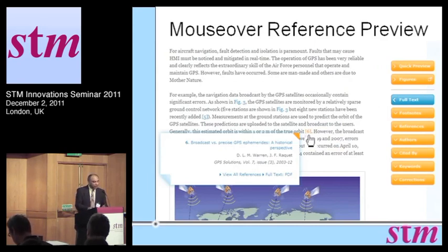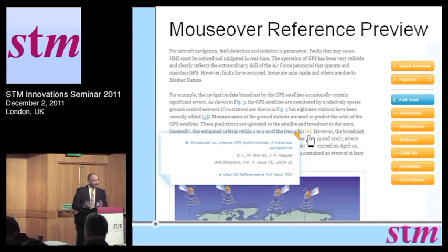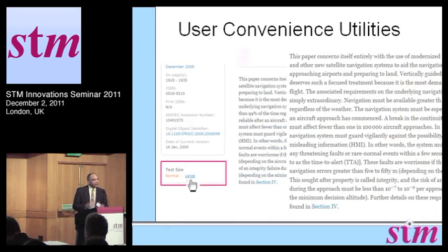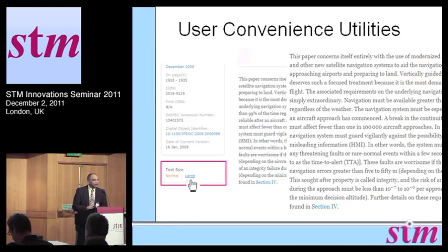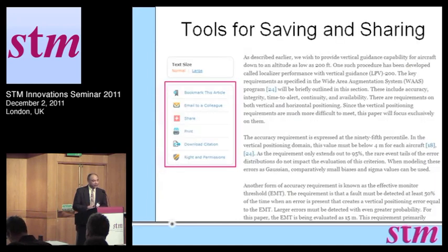In terms of references, there are mouse-over reference links so the user can click on the actual reference hyperlinks and see a quick preview of the reference without having to scroll all the way down. Our user research also showed that many users had difficulty with legibility, so we've incorporated a simple utility to increase the font size of the article to make it more legible.